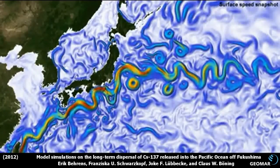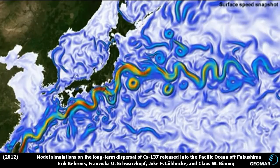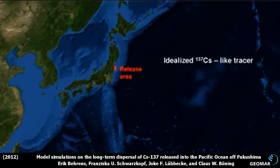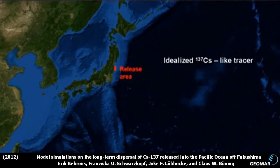The model simulates the ocean currents with very high resolution, thus capturing much of the intense eddying flows along the Kuroshio. To simulate the dispersal of the contaminated water by the ocean currents, we use an idealized tracer behaving like a dye with a half-life of 30 years, which we injected into the coastal waters of Fukushima.